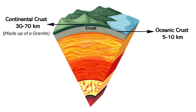The other type is oceanic crust, which makes up most of the ocean floor. It is thinner at about 5 to 10 kilometers but denser, and mostly made up of the rock basalt. Most geological activities that affect us — like earthquakes and volcanic eruptions — happen in this crust. The crust is broken into large pieces called tectonic plates and contains important natural resources like minerals, fossil fuels and soil for agriculture.